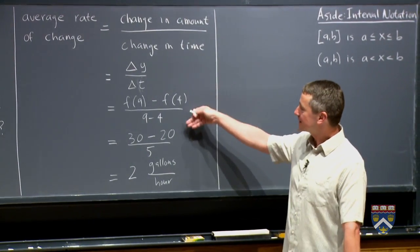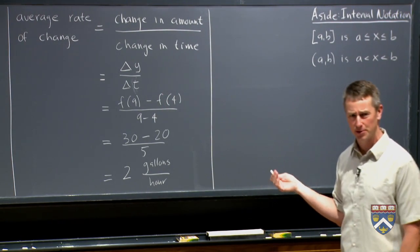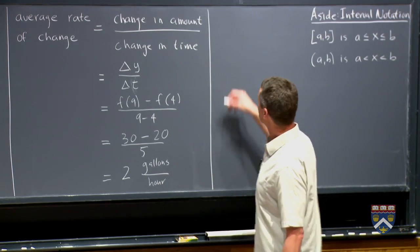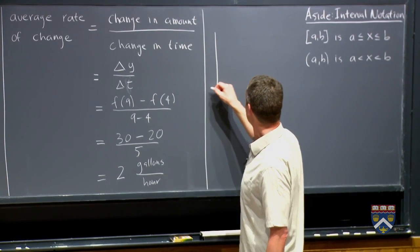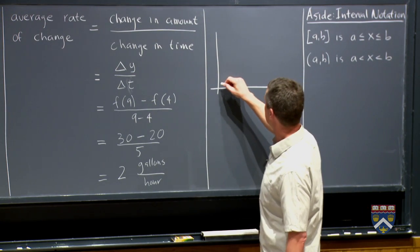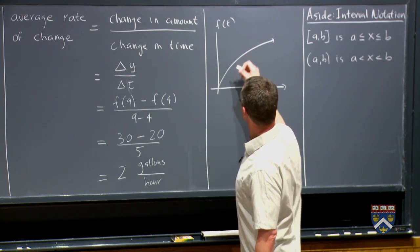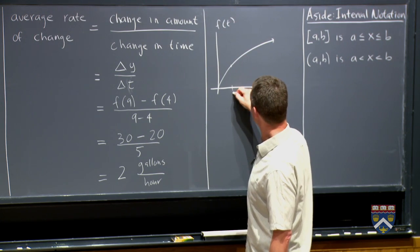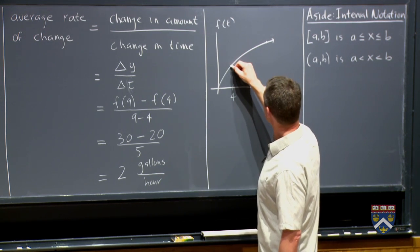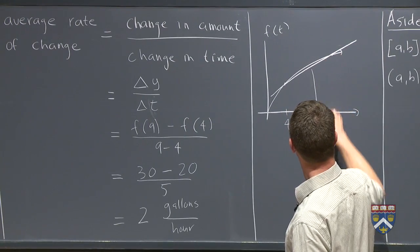Now I hope that when you looked at this, change in y over change in t, this thing minus this thing, that reminded you of having computed something earlier in your precalculus life, namely slope. So if we were looking at this graphically, if we graph our function f of t, looks like this. We went over here to 4. We went over here to 9.